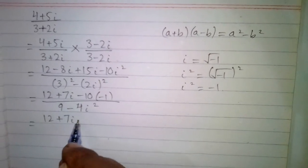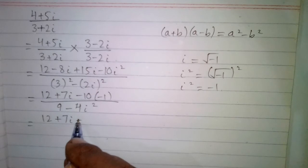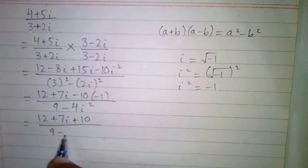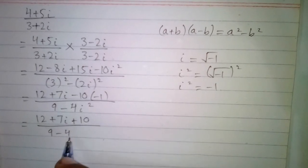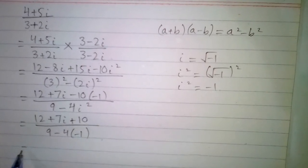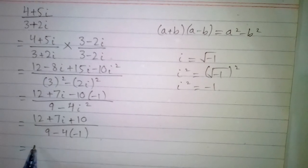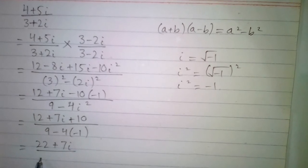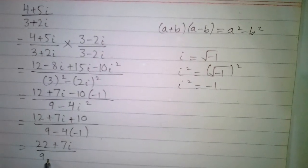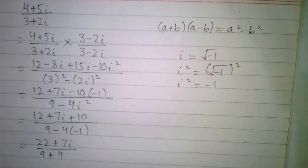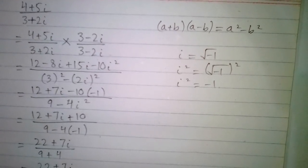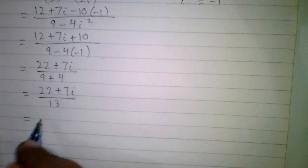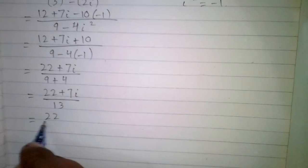This gives us 12 plus 7 iota plus 10 in the numerator, since minus times minus 1 gives plus 10. In the denominator, 9 minus 4 times minus 1 becomes 9 plus 4. So we have 22 plus 7 iota upon 13.